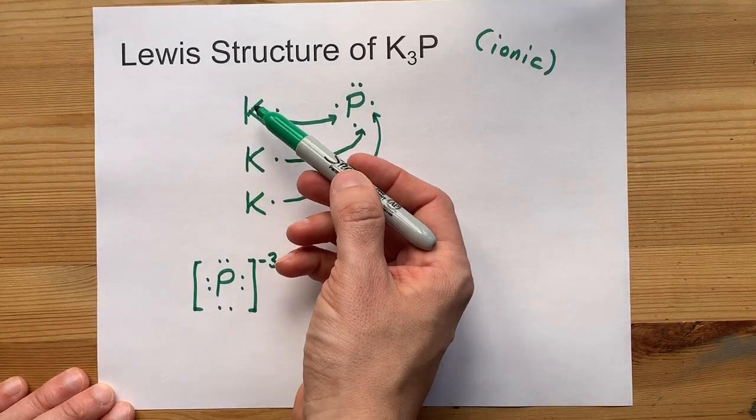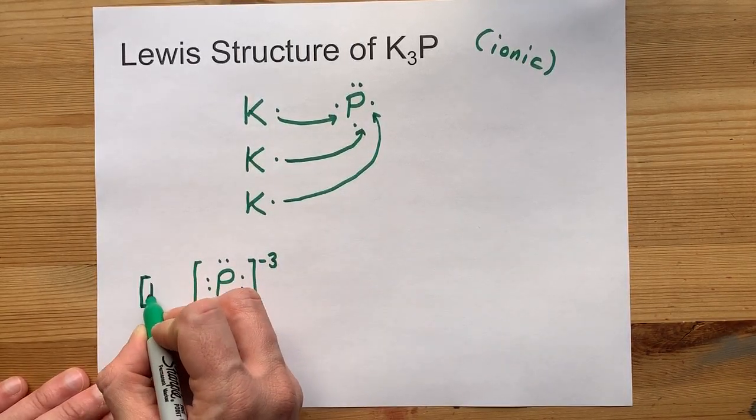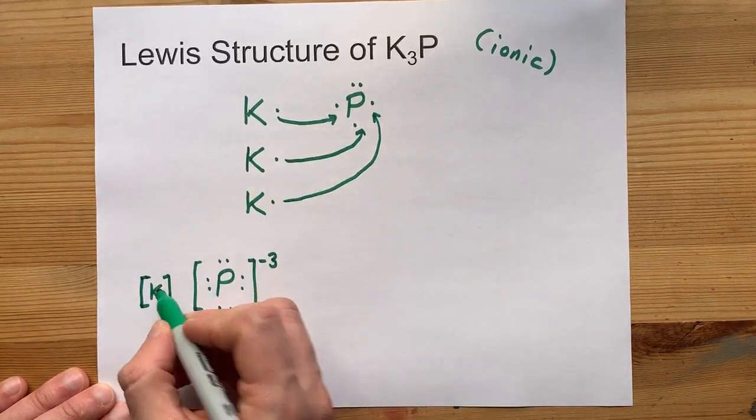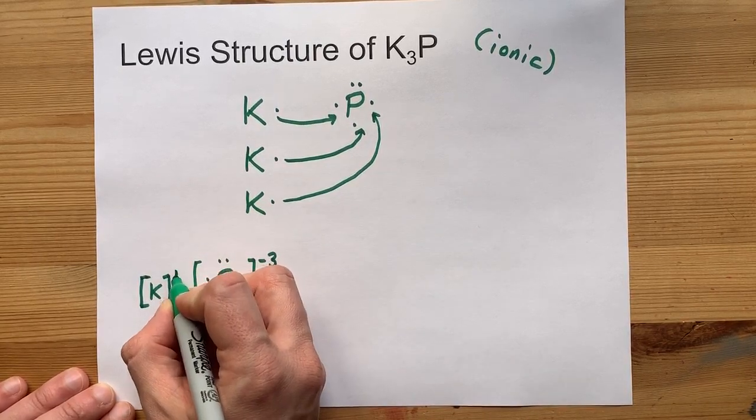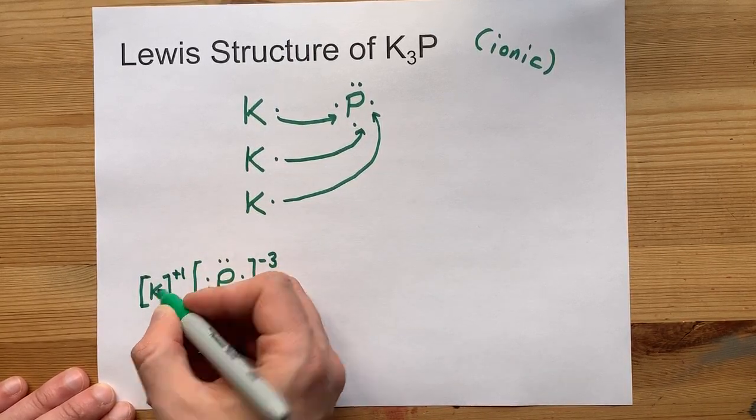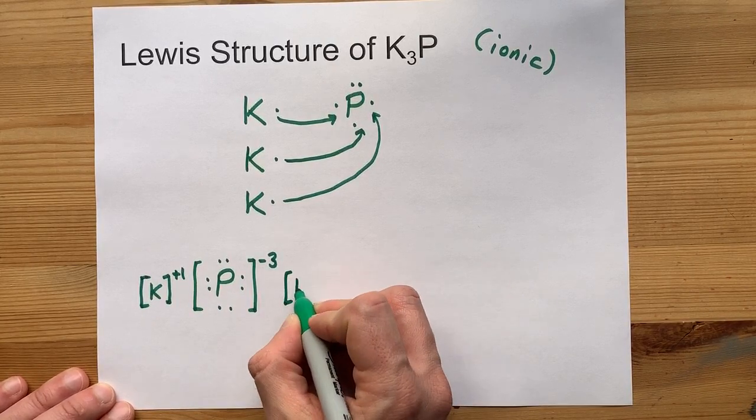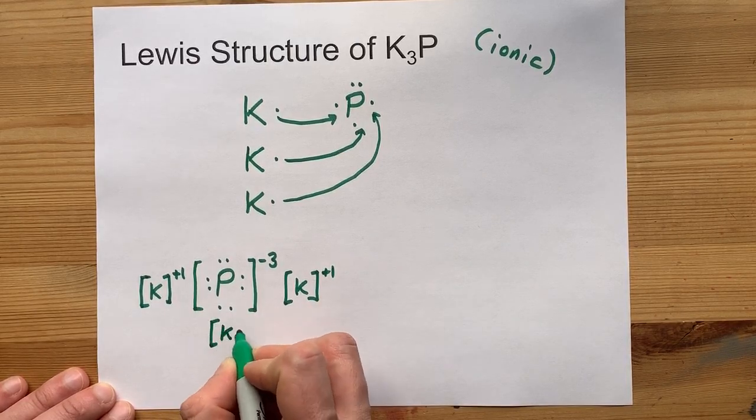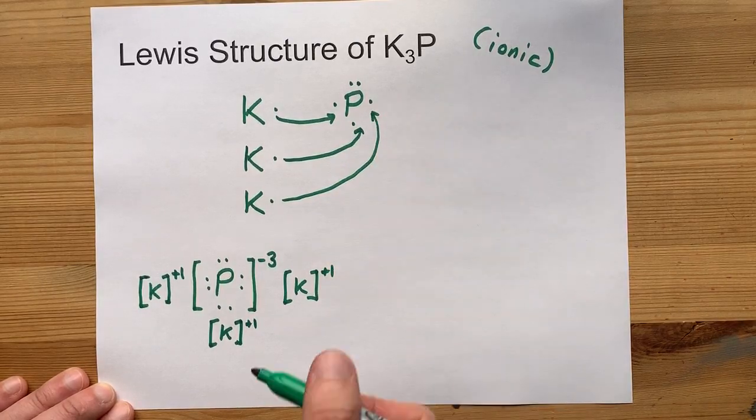We're going to have to show the three potassium atoms which gave away the one valence electron that they had. So don't put any dots there. It gave those dots away but give it a plus one charge to show people that it lost one electron. Now this potassium here is the same deal and we need a third potassium because we required three of them to fill the outer shell on the phosphorus.